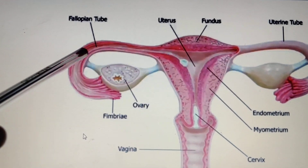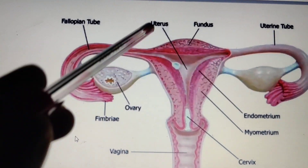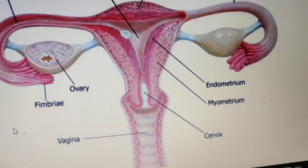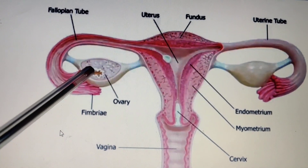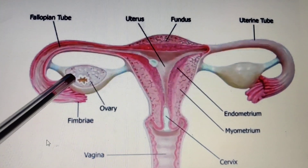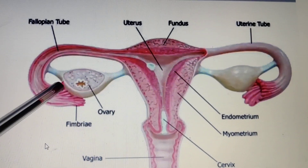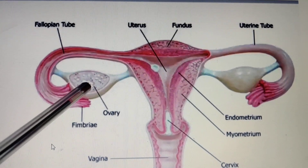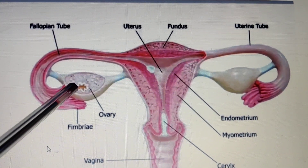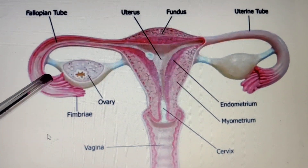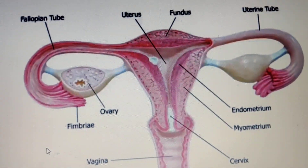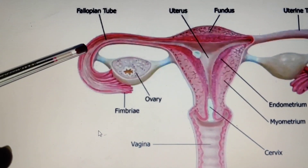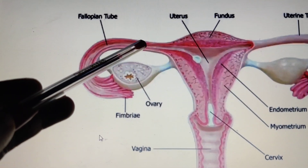This is the long fallopian tube starting from here up to this point. Inside the ovary, the female gamete is produced, and the function of these fimbriae is to collect the produced female gamete — that is, the secondary oocyte. This infundibulum part opens into ampulla, and ampulla opens into isthmus.